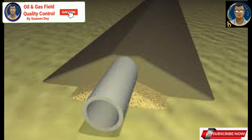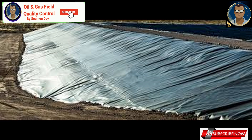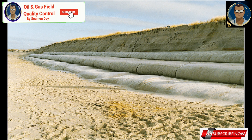Rock berms: a common method is to dump quarried and graded rock over the pipeline, creating a protective berm. The rock berm should be designed with sufficient size and volume to withstand hydrodynamic loading and prevent the pipeline from breaking out. Erosion control blankets help prevent soil erosion by providing a protective layer and encouraging vegetation growth. Geotextiles are also used in Gulf areas near the seashore where high water levels can wash away the berm during tides.